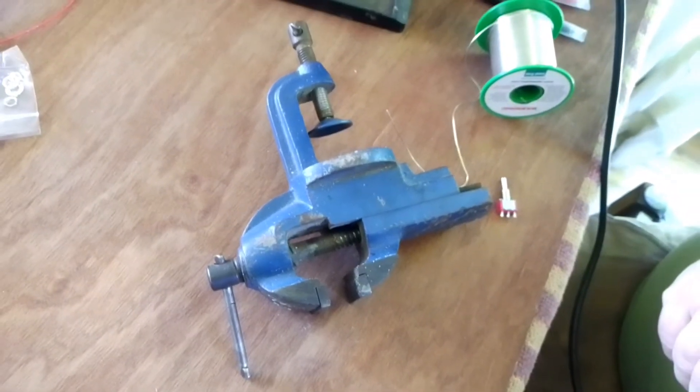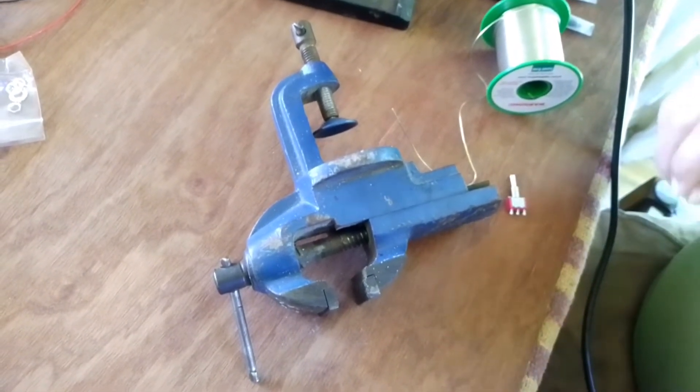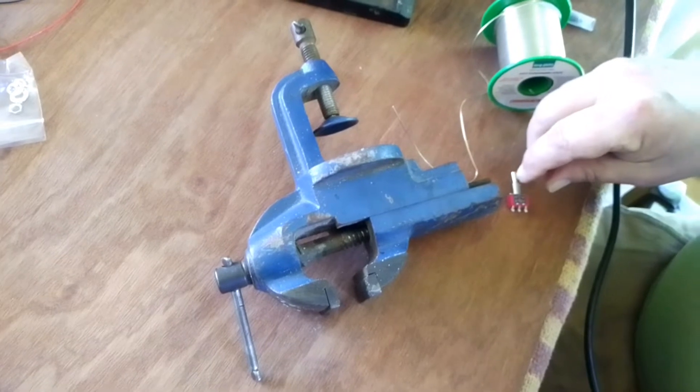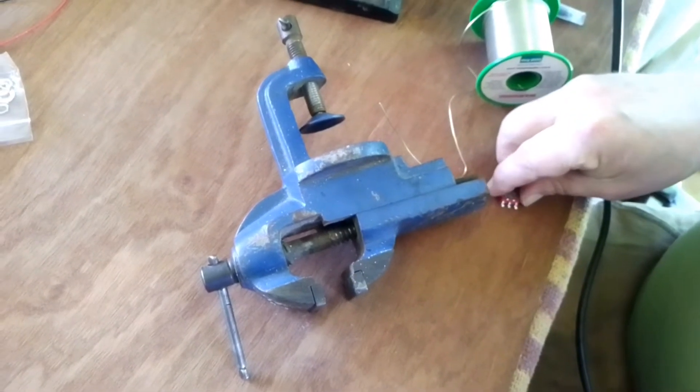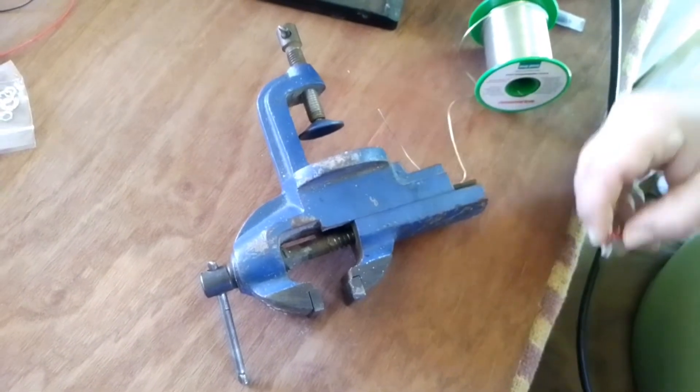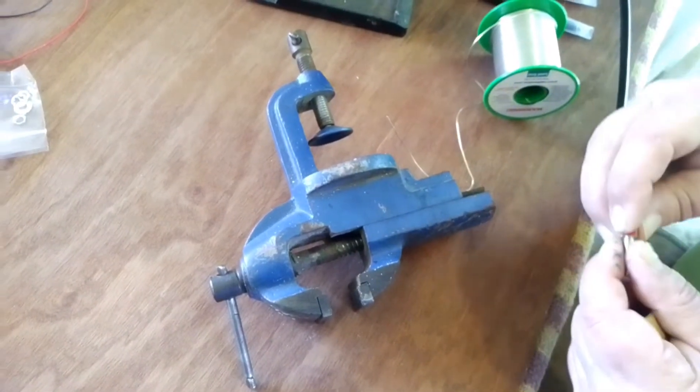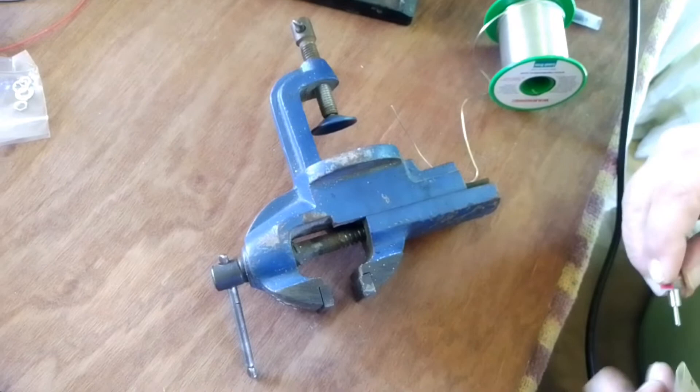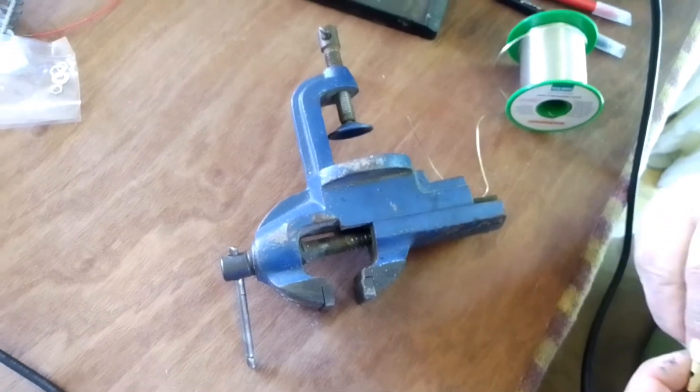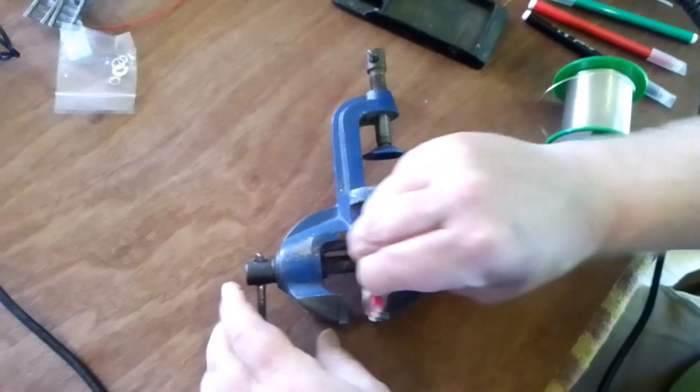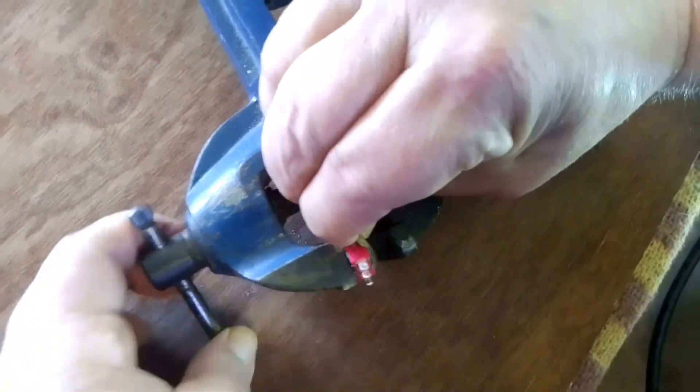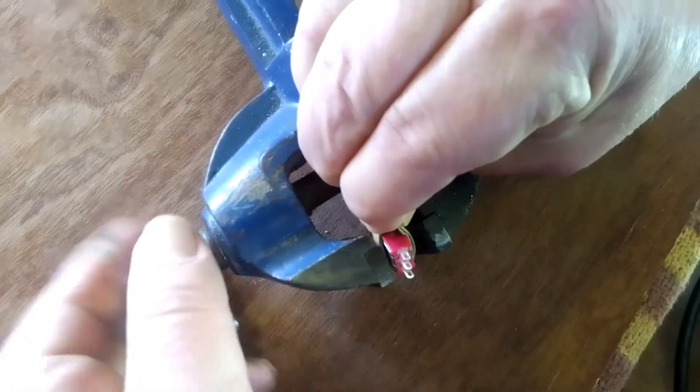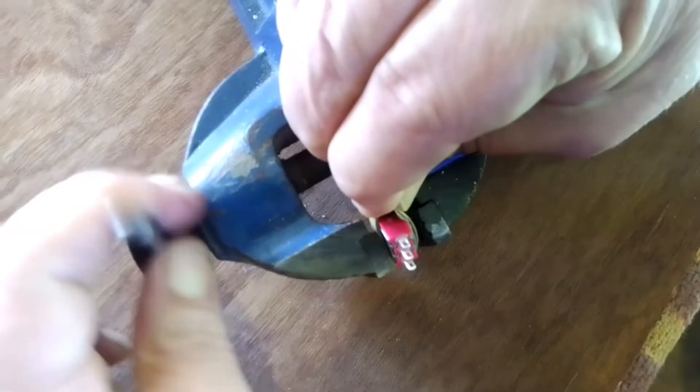When you solder the switch you tend to run out of hands if you try to hold the switch, the solder and the soldering iron. So you need something to just hold it steady while you do the soldering. Unless you've already fastened it into your control panel and that will hold it in place. So the only thing I could find to hold it is this vise. I've wrapped a bit of cord around it so I don't put any marks on the switch.